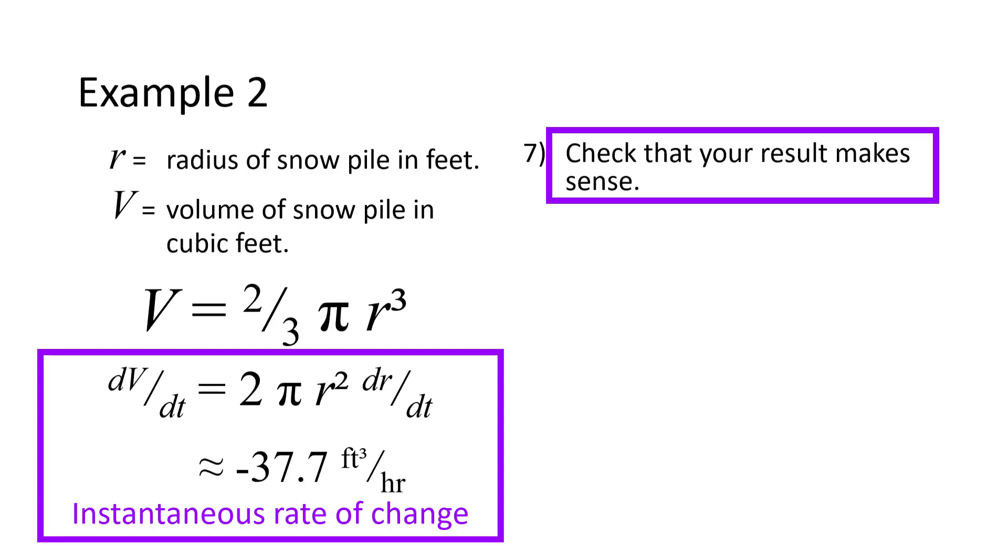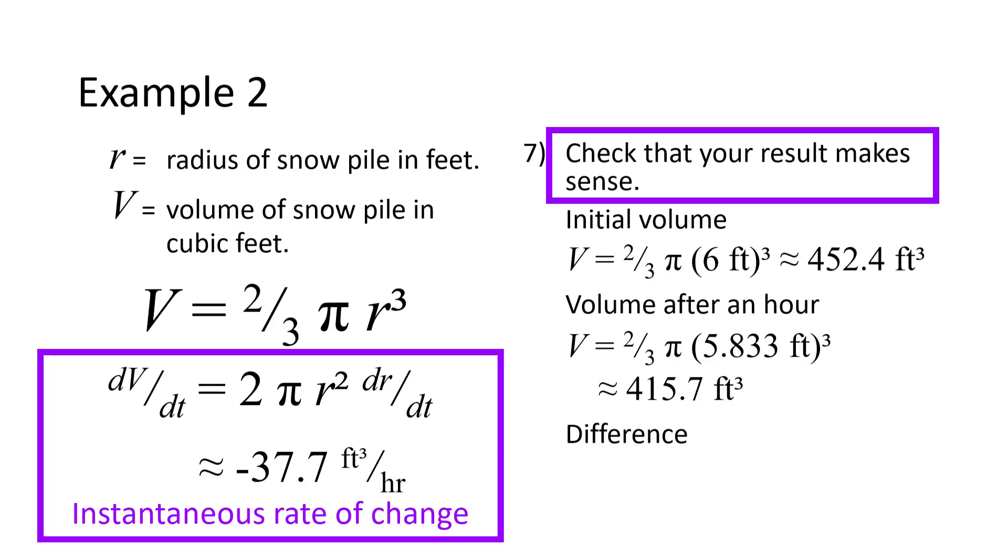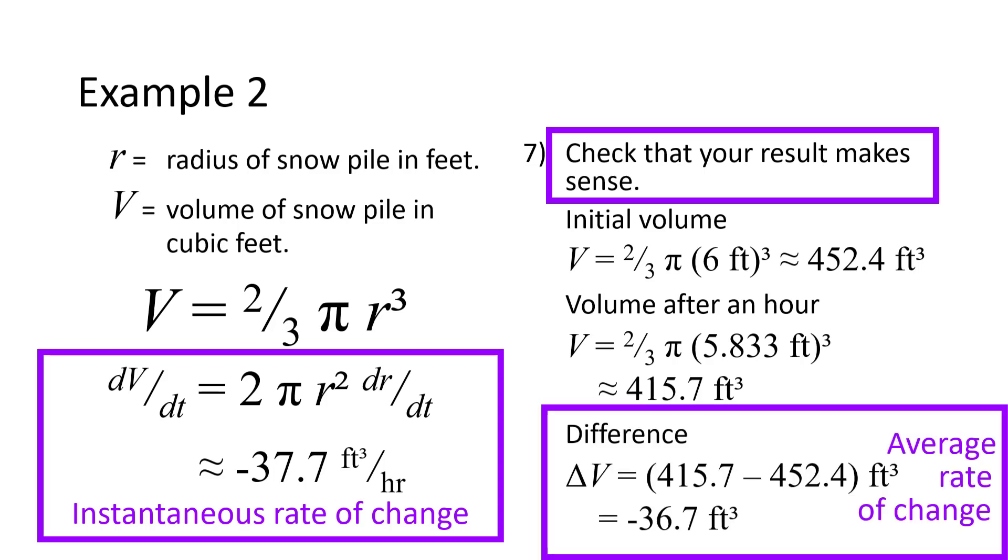Let's find out how much the volume decreased over an hour, starting when the radius was 6 feet. At the end of an hour, the radius had decreased by 2 inches, which is 1/6 of a foot, so the new radius is 5.833 feet. The change in volume over that hour is 36.7 cubic feet. That's a little less than the instantaneous rate we found of 37.7 cubic feet. We expected that because over the course of the hour, the rate of change of volume is slowing down a little bit.